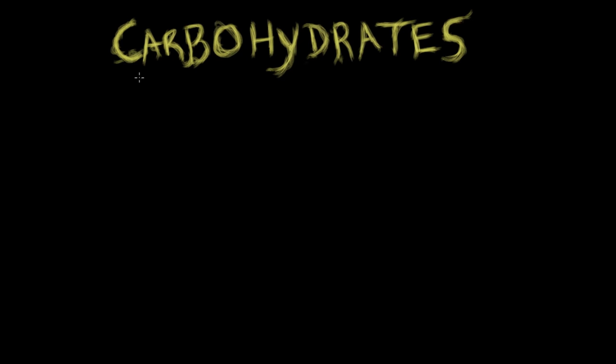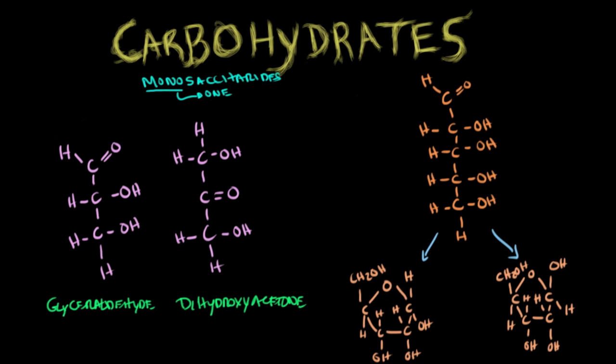The first category we need to discuss are monosaccharides — mono means one, so one sugar, one building block for example of a disaccharide, an oligosaccharide, and finally the large molecules, the polysaccharides. Now I'm going to show you examples of monosaccharides.